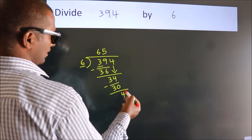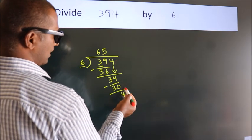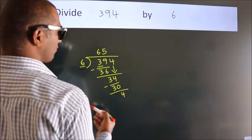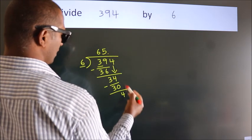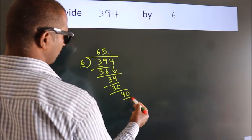After this, no more numbers to bring down. So what we do is put a dot, take 0, so 40.